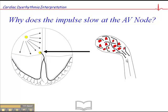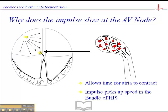And then these thick conduction fibers allow the impulse to travel very rapidly down the bundle of His. This allows time for the atria to contract, as I mentioned earlier, and then the impulse picks up speed in the bundle of His.